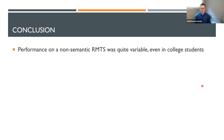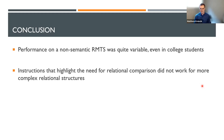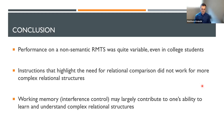In conclusion, performance on non-semantic relational match-to-sample tests is quite variable even in college students. We were surprised the system mapping problems didn't improve much, and that there were actually two different groups. Instructions that highlight the need for relational comparisons seem to not work for system mapping problems, but they do work for analogies — so this may be a useful strategy when trying to get people to think analogically. We think working memory largely contributes to one's ability to learn and understand complex relational structures through feedback, as we saw high performers trying different strategies throughout and ultimately succeeding by block four.